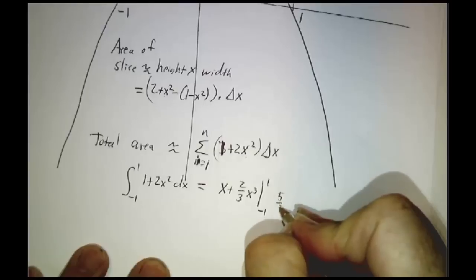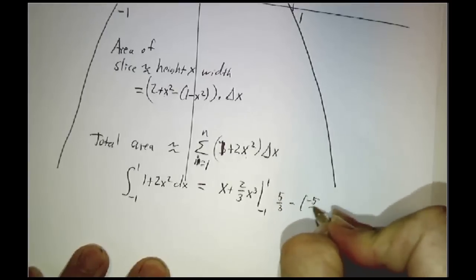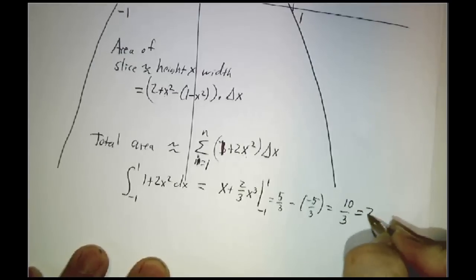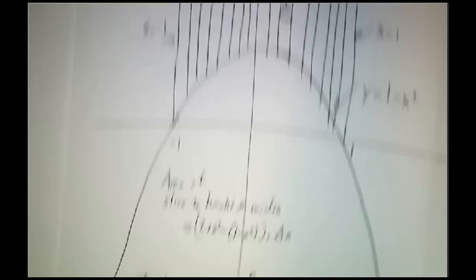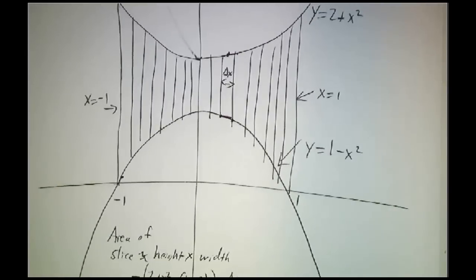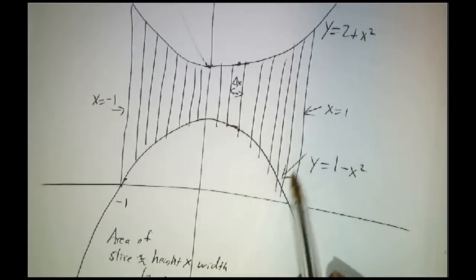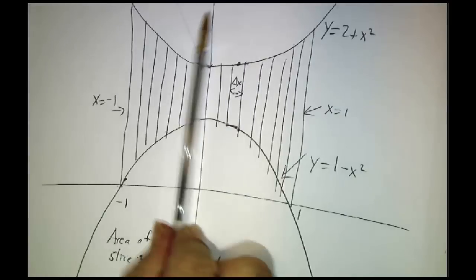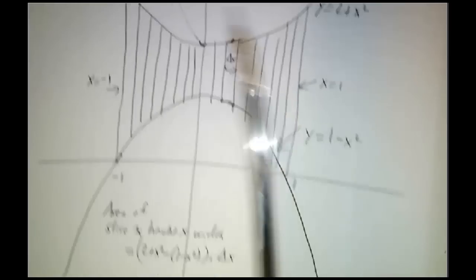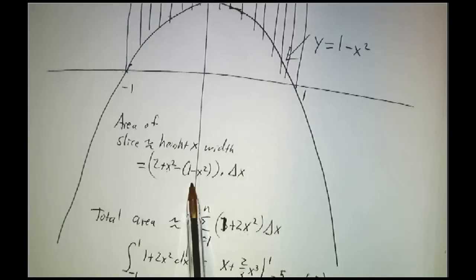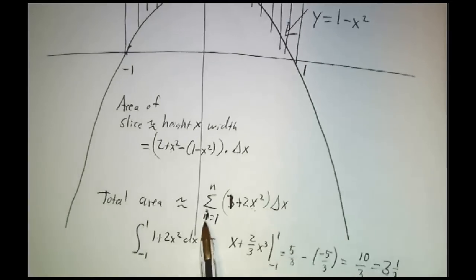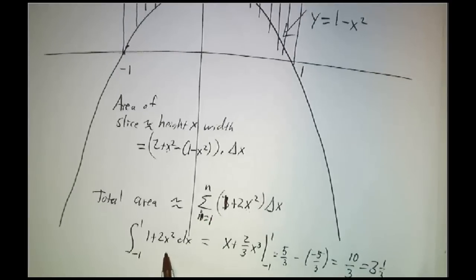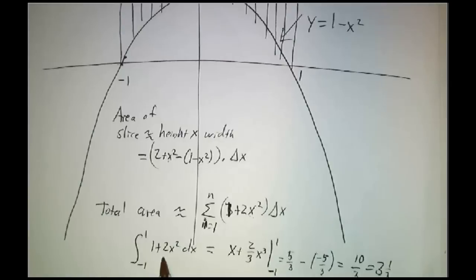And that gives us 5/3 minus negative 5/3. And that gives us 10/3 or 3 and a third. So the area of this region is 3 and a third. It's a goofy region. There's no formula for the area of this kind of region. But by chopping it up into pieces, we got a whole bunch of almost rectangles. We got the area of each almost rectangle as its height times its width. We added them together. We took the limit. We got an integral. And finally, we used the fundamental theorem of calculus to evaluate the integral.